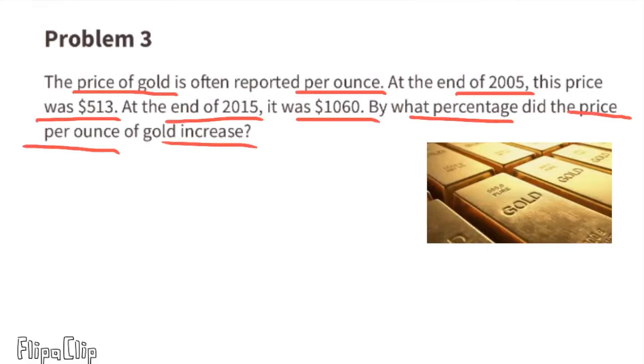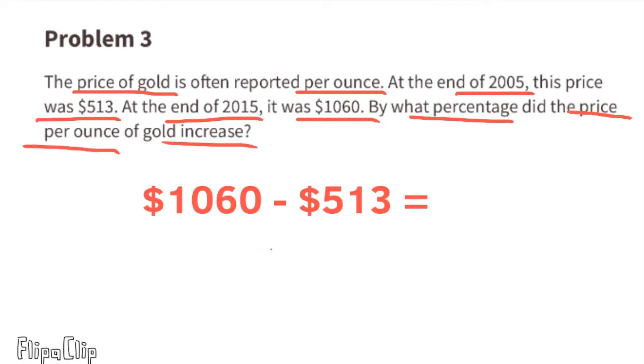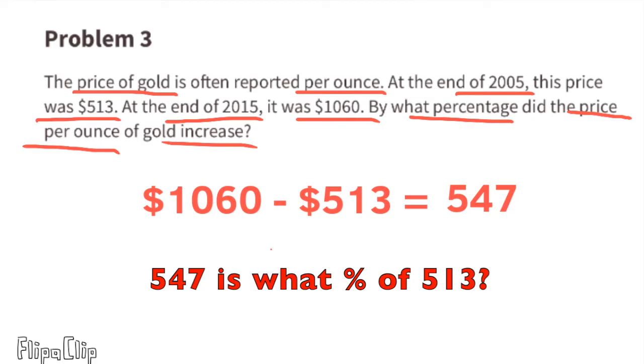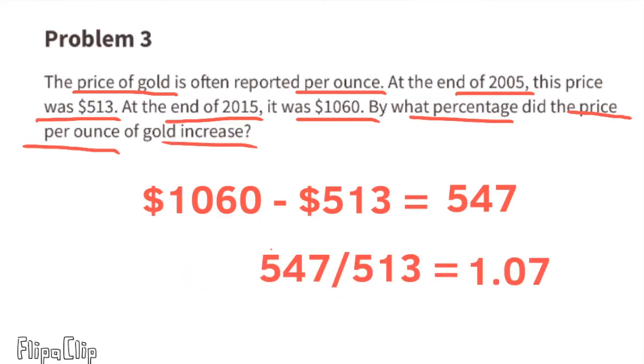Problem number three: The price of gold is often reported per ounce. At the end of 2005, this price was $513. At the end of 2015, it was $1,060. By what percentage did the price per ounce of gold increase? First we need to find the difference: 1,060 minus 513 equals $547. The question can be rewritten as: 547 is what percent of 513? We can find this answer by dividing 547 by 513, which equals 1.07. Written as a percentage, 1.07 is 107%. From the year 2005 to 2015, the price of gold per ounce increased 107%.